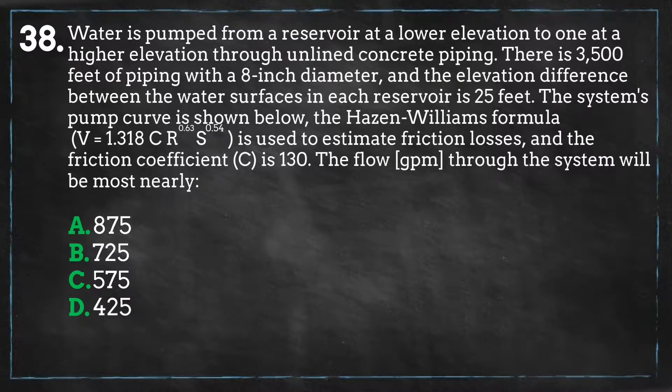So we have the Hazen-Williams equation, where V equals the flow velocity through the system, C equals the pipe roughness coefficient, R equals the hydraulic radius, and S equals the slope of the energy line, or the head loss per length of pipe. Since we are using US customary units, the coefficient will be 1.318, and when using SI units, the coefficient will equal 0.849.